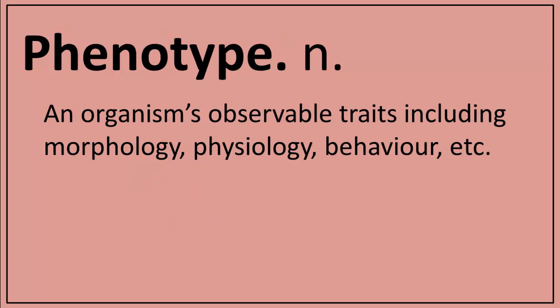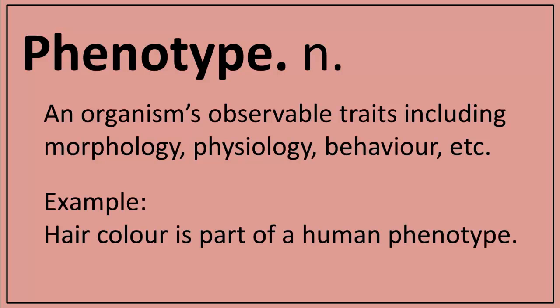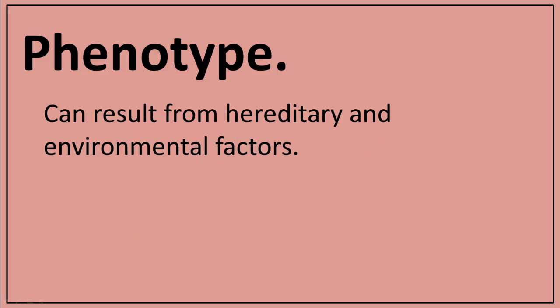We will define a phenotype as the set of observable traits that an organism may have. Hair color, for example, is part of the phenotype of a typical human. Although less intuitive, what a person chooses to do is also part of his or her phenotype, as is whatever is produced by his or her behavior. An organism's phenotype can be the result of hereditary factors like genetics, as well as environmental factors like diet.